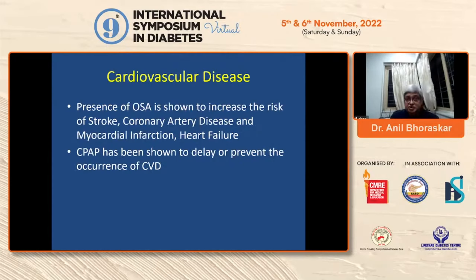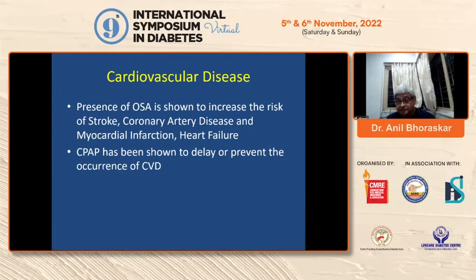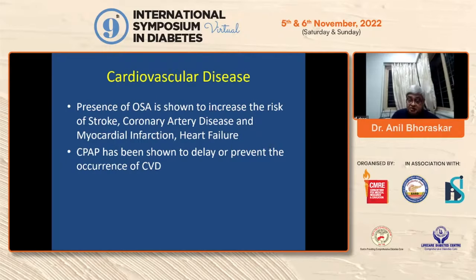The presence of OSA increases the chances of stroke, coronary artery disease, MI, and heart failure. CPAP has been shown to delay or prevent the occurrence of coronary artery disease. Studies have shown the CPAP machine reduces mortality, particularly from atrial fibrillation occurring during sleep or at night, and early morning infarctions. MIs occurring at 4–5 a.m. are reduced when the patient uses an overnight CPAP machine.